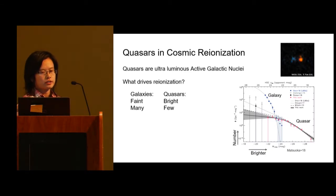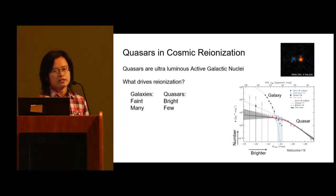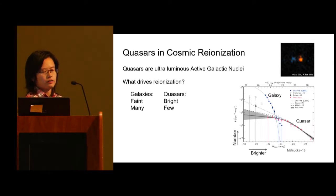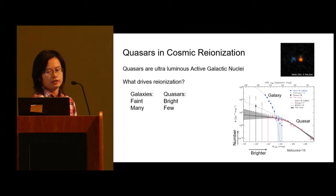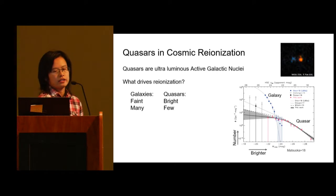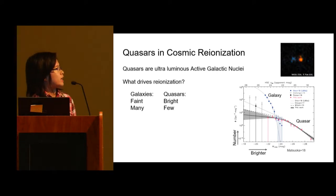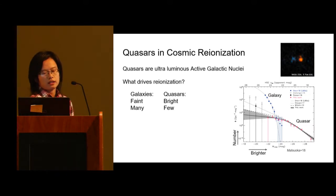Apart from first galaxies, JWST will also study another very interesting object: first quasars. Quasars are supermassive black holes. As they accrete materials, they give us ultra-luminous radiation. Because they are very bright, these objects are another candidate to reionize the universe.